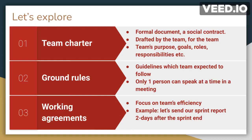Ground rules can also be formed for communication channels. For example, in some organizations they may use both Slack and Google Chat as communication tools. However, a team may decide to use only Slack for all communication, because otherwise the team may have to monitor both tools, which may not be productive. So the team can set a ground rule saying, 'We will just use Slack for all project communication.'